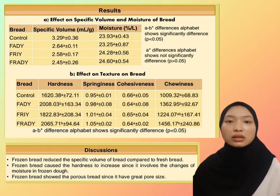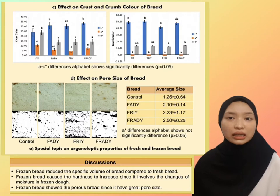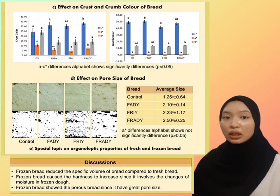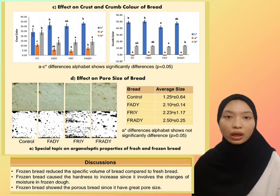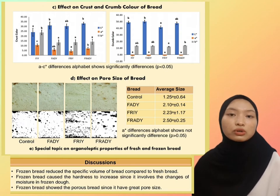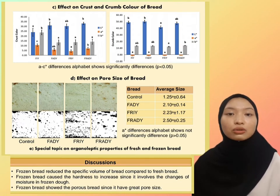Other texture attributes such as springiness, cohesiveness, and chewiness showed no significant difference. The pore size of each bread consequently showed differences in pore formation based on binary images produced from ImageJ software. Frozen bread showed larger pore size, caused by structural damage during frozen dough storage.